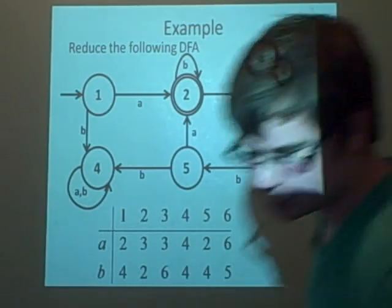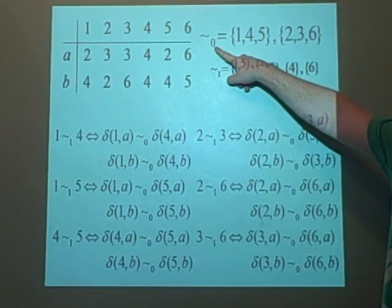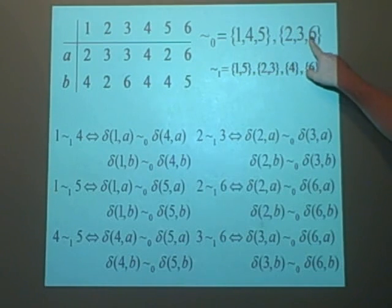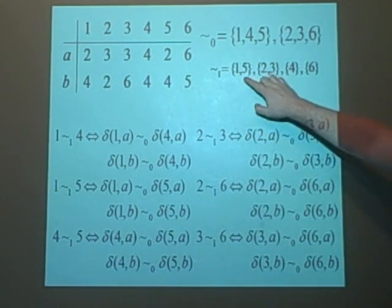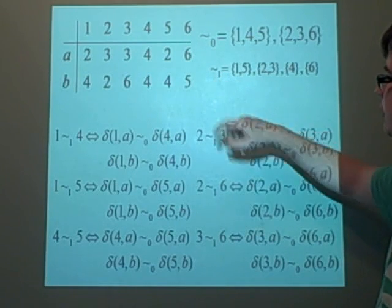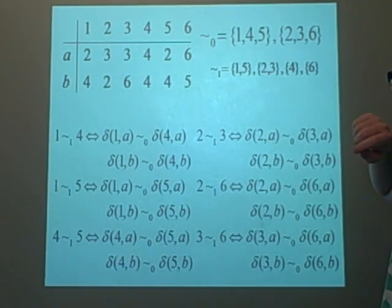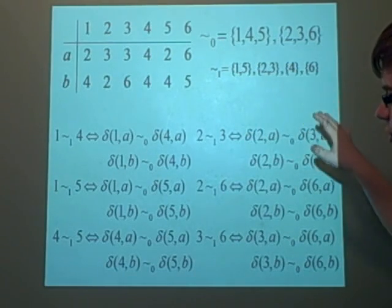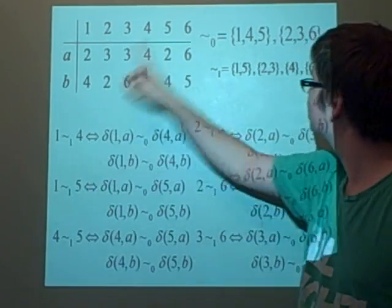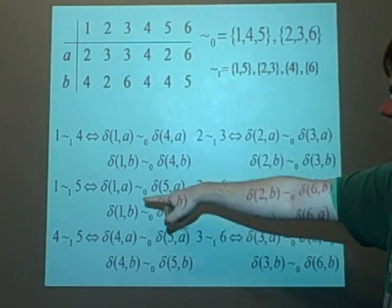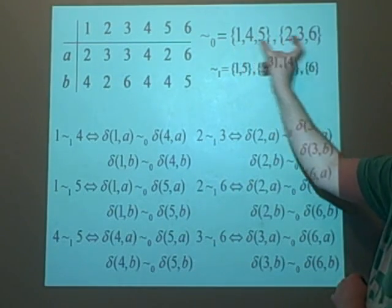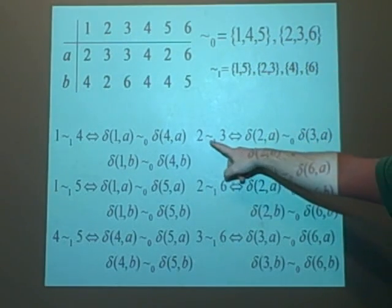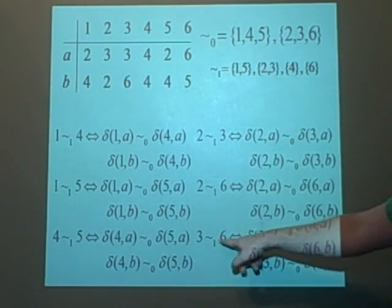So now what we want to do is, with our zero equivalence, we've got {1, 4, 5} which were the non-final states, and {2, 3, 6} which were the final states, and we want to check if any of these can be split further. From the {1, 4, 5} group, 1 could be equivalent to 4, it could be equivalent to 5, or 4 could be equivalent to 5. We can't have crossovers, because it needs to already be an equivalence. And from {2, 3, 6}: 2 could be equivalent to 3, 2 could be equivalent to 6, or 3 could be equivalent to 6 — we don't know yet.